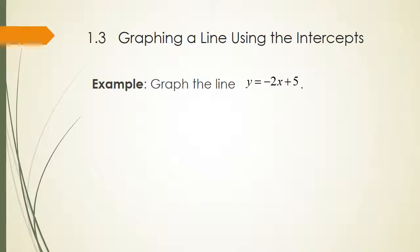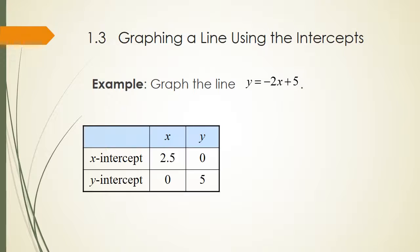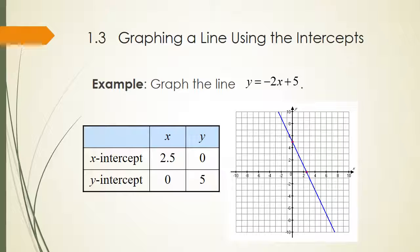Let's graph the line y equals negative 2x plus 5. The x-intercept is (2.5, 0) and the y-intercept is (0, 5). We then plot those points on the graph and connect them with a straight line.